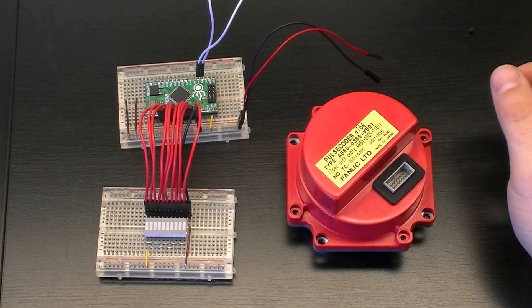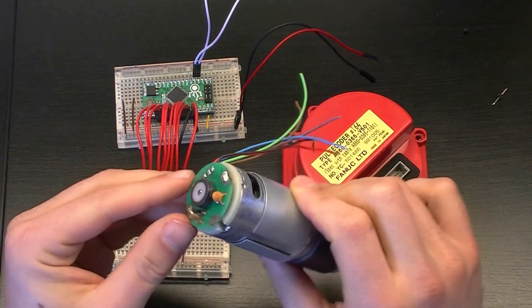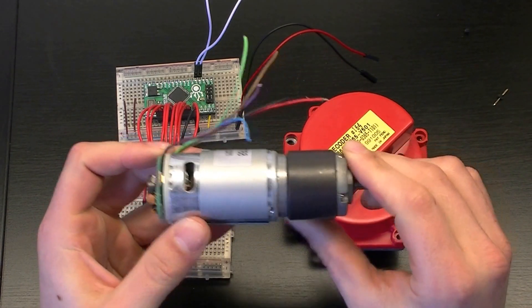So in this video we're going to talk about rotary encoders. Now what a rotary encoder does is it is used to tell the angular position of a motor, like this one.